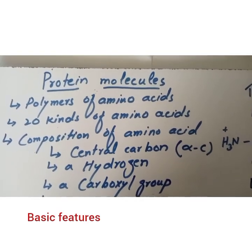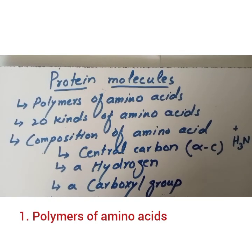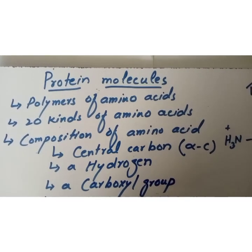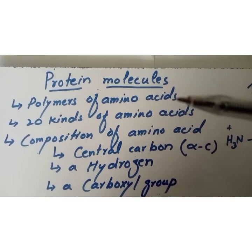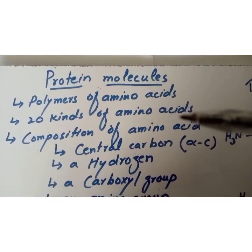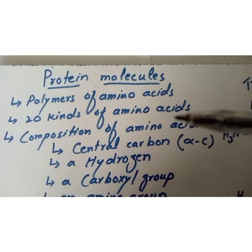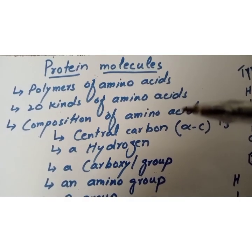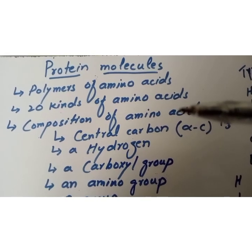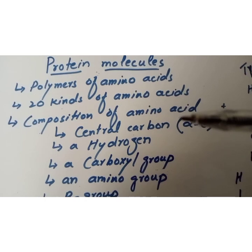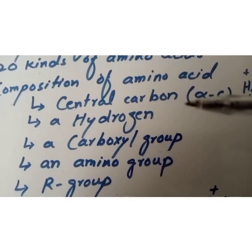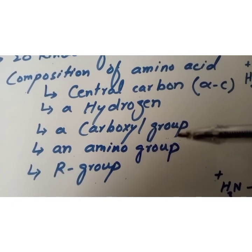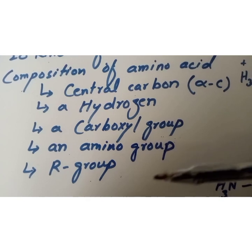Protein molecules are the polymers of amino acids. There are 20 different kinds of amino acids that make up essentially all proteins on earth. Each amino acid has a fundamental design composed of a central carbon, also known as the alpha carbon, a hydrogen, a carboxyl group, an amino group, and an R group.